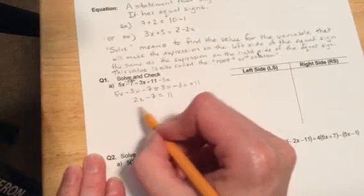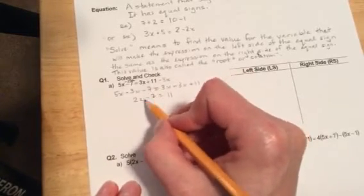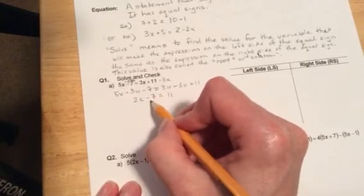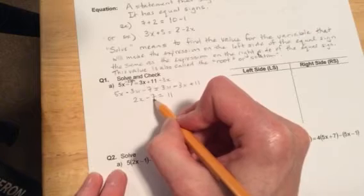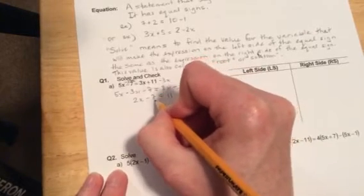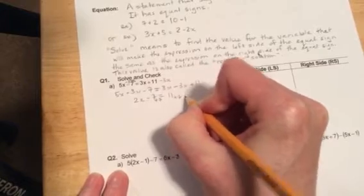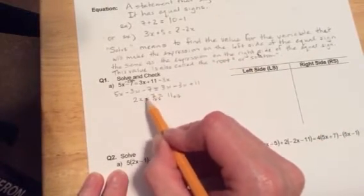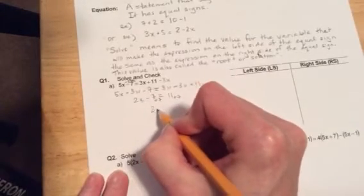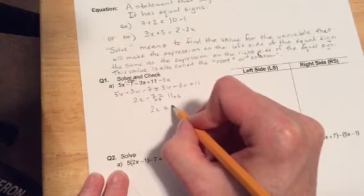Now what we need to do is work on getting x all by itself on this side. We're going to do BEDMAS backwards to isolate x. We're going to get rid of any adding or subtracting first by doing the opposite operation. We have a minus 7 so to undo that we're going to add 7 to both sides. On this side we have 2x - 7 + 7, which becomes 0, and we're left with 2x. On this side we have 11 + 7 which is 18.